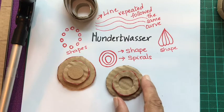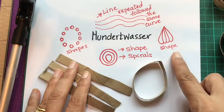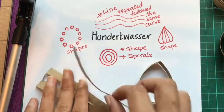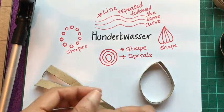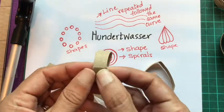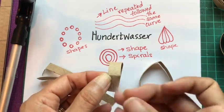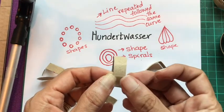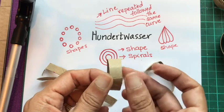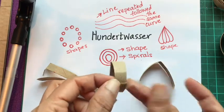You can apply the same idea and create a more teardrop or onion-looking kind of shape, which Hundertwasser often uses in his work.